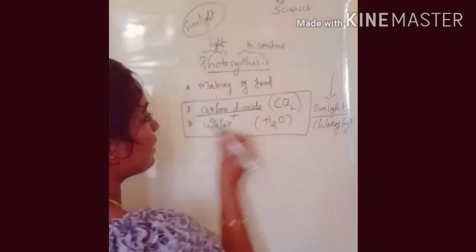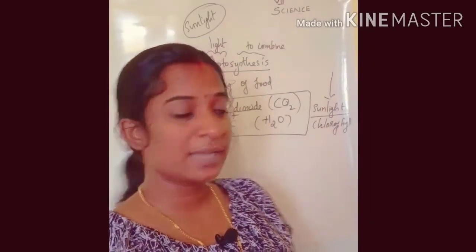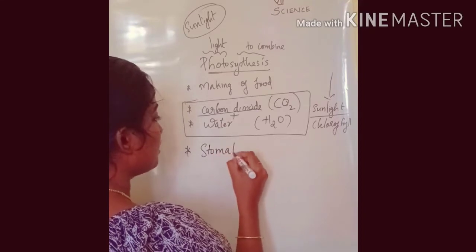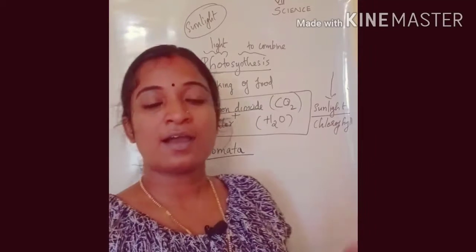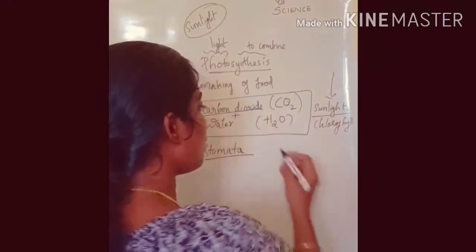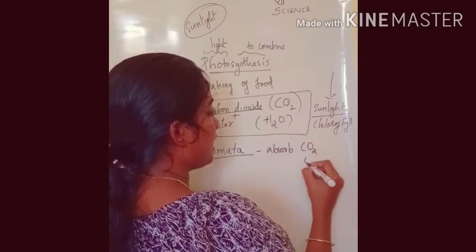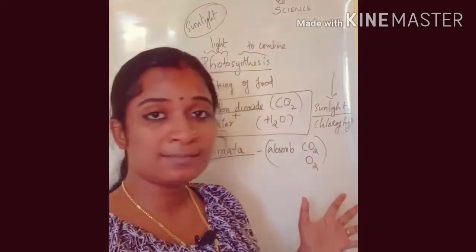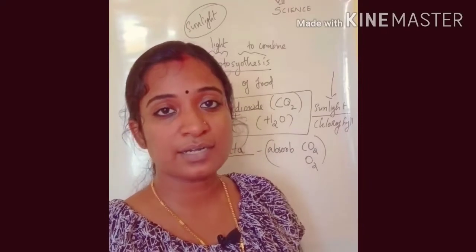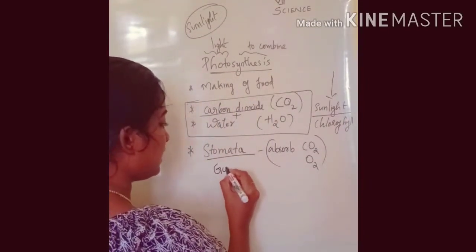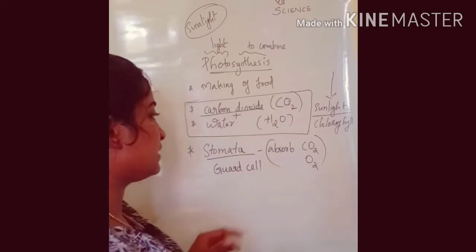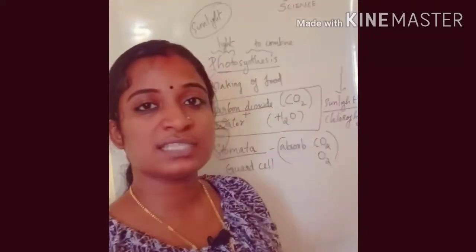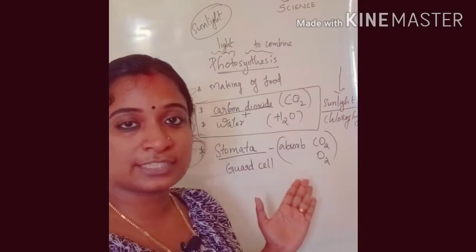Let us discuss how carbon dioxide reaches the leaves. There are small openings on the leaves known as stomata — small pores that help absorb carbon dioxide and also release gases formed in the plant body. These stomata are protected by a cell known as the guard cell. Plants get carbon dioxide for photosynthesis through their stomata, which are protected by the guard cell.